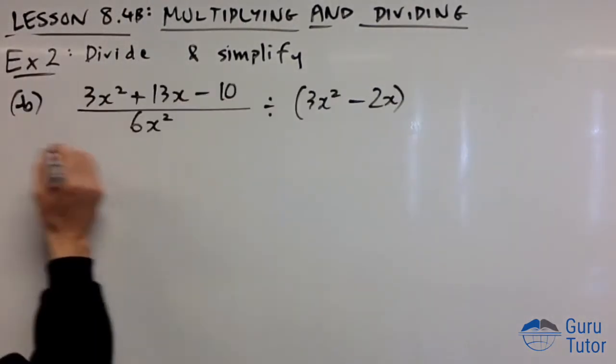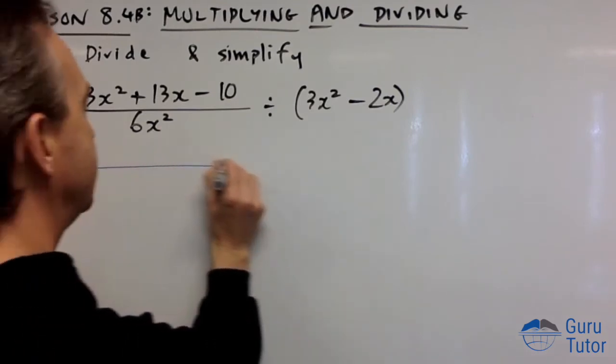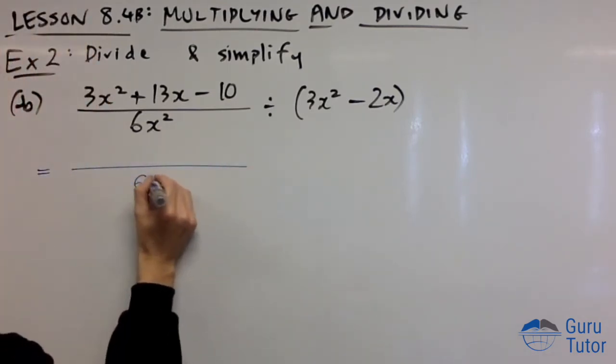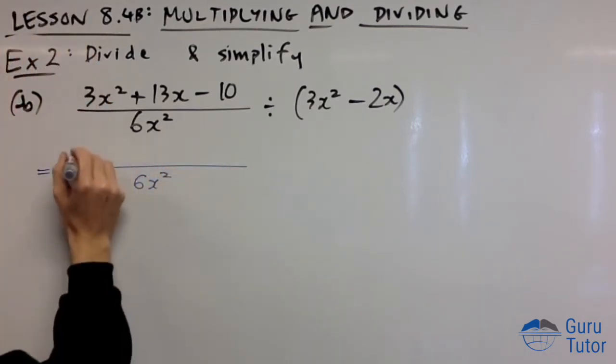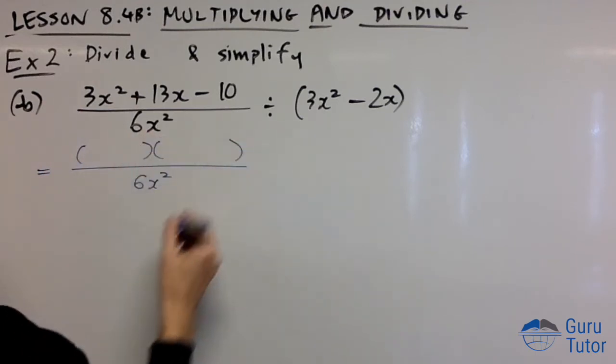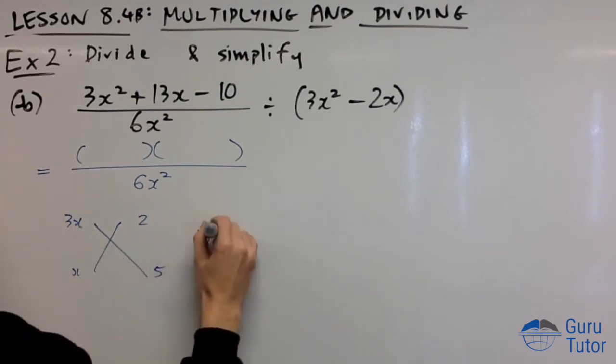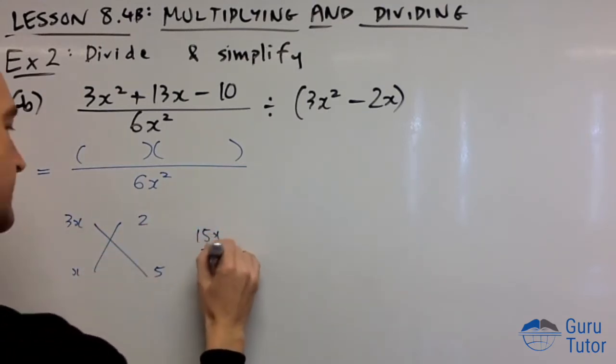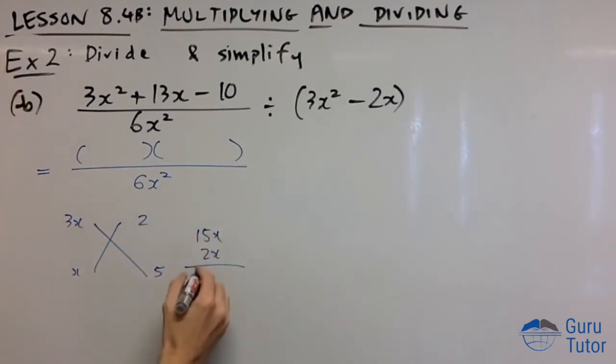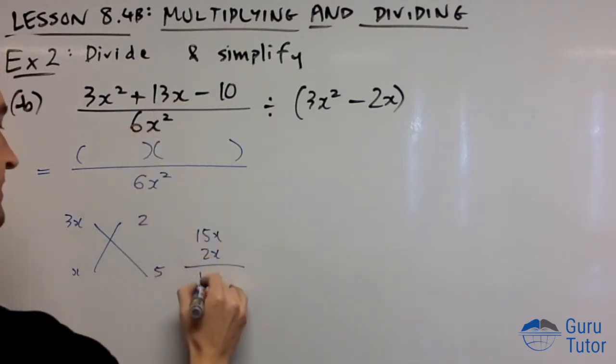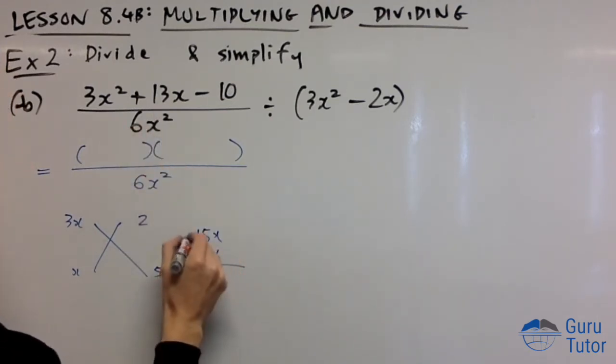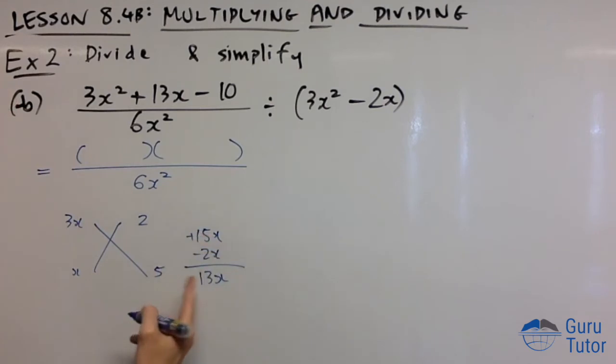Let's try one last one, part b. We're dividing. Let's factor. 6x² stays. Can we factor the top? This is one of those annoying ones where the leading coefficient is not one, so we use the cross method. 3x, x. Factors of 10: 2 and 5. 3×5 is 15x, 2×x... oh I got lucky! These have to add to give 13x.